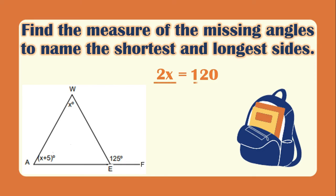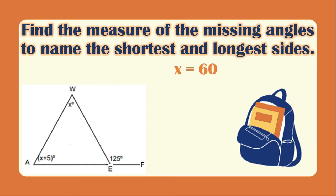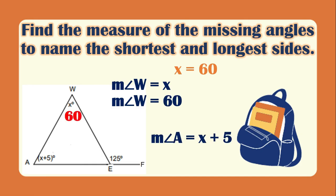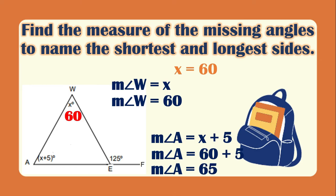Dividing both sides by 2: 2x divided by 2 is x, and 120 divided by 2 is 60. So x equals 60. The measurement of angle W is x which is 60, and the measurement of angle A is x plus 5 which is 60 plus 5 equals 65. To get the missing interior angle we add the two interior angles and subtract from 180, giving us 55 degrees.